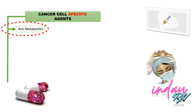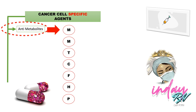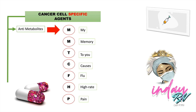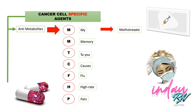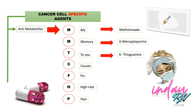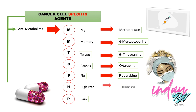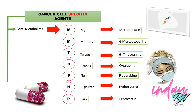For anti-metabolites, we have a mnemonic: 'My memory to you causes flu and high rate pain.' M stands for methotrexate, another M for 6-mercaptopurine, T for 6-thioguanine, C for cytarabine, F for fludarabine, H for hydroxyurea, and P for pentostatin. So: methotrexate, mercaptopurine, thioguanine, cytarabine, fludarabine, hydroxyurea, and pentostatin.